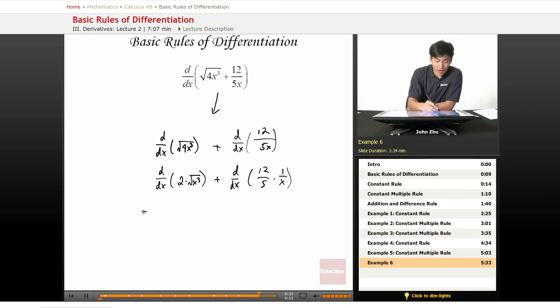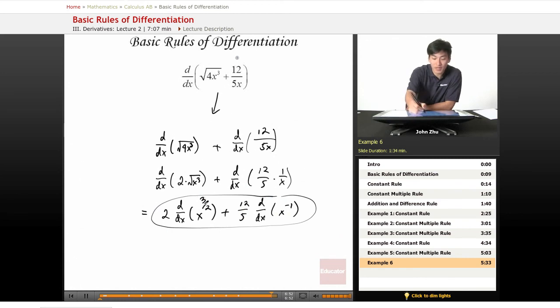So rewriting all this with the constant multiple rule: 2 times d/dx of square root of x cubed, which just means x to the 3 halves, plus 12 over 5 times d/dx of x to the negative 1. And there's our expression for the derivative of this function.